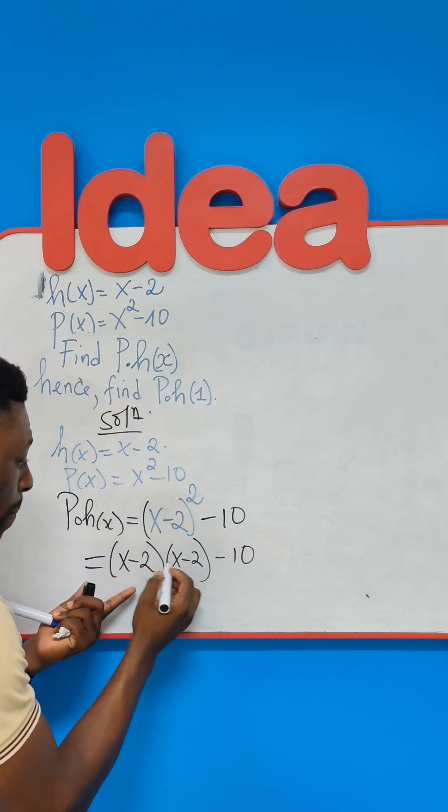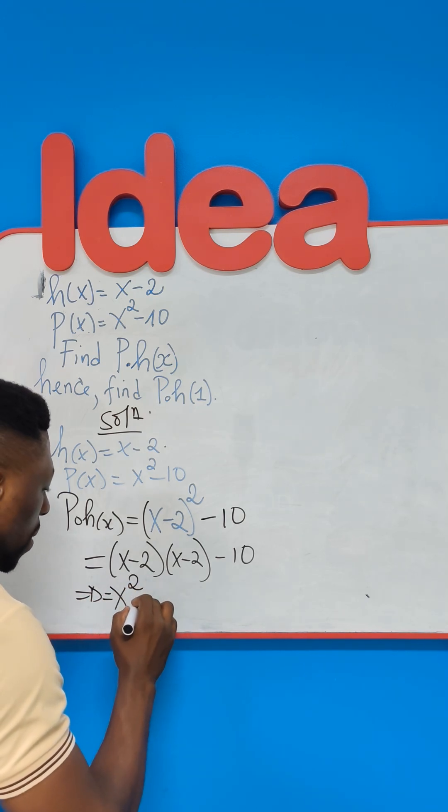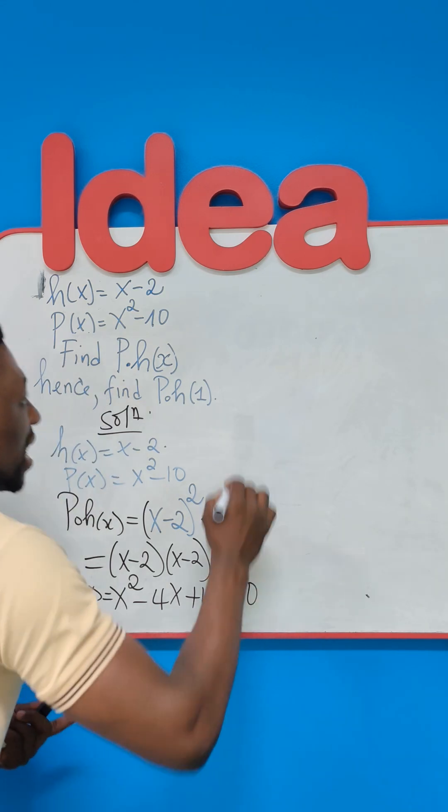Again, if you do this correctly, which is X squared, it's going to be equal to X squared minus 4X and then plus 4 and then minus 10.